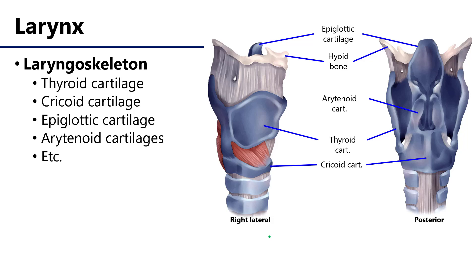Let's take a look at some of the constituent cartilaginous parts of the larynx. The larynx is largely comprised of hyaline cartilage elements that we refer to as the laryngoskeleton. The major portions of the laryngoskeleton are the thyroid cartilage, the cricoid cartilage, the epiglottic cartilage, and the arytenoid cartilages, which are paired as we'll see. There are a few other minor paired cartilaginous elements, but they won't be the focus of this video.